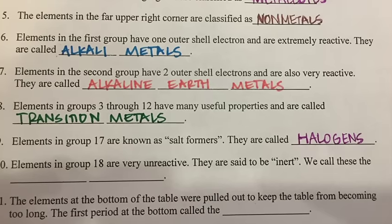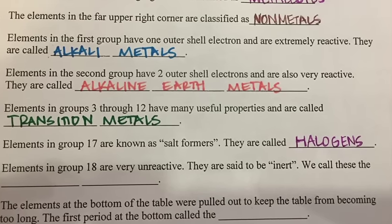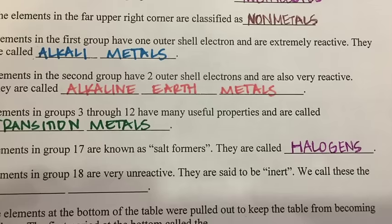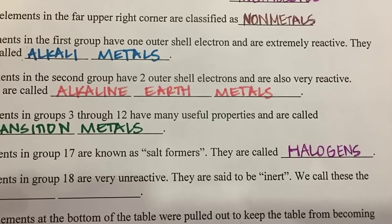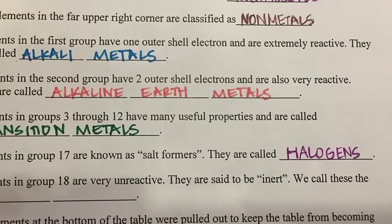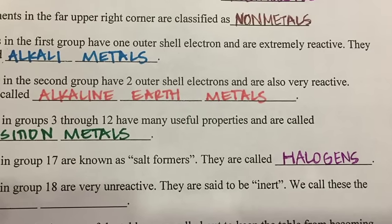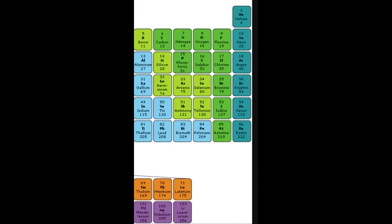Group seventeen are all non-metals. They are very reactive and poor conductors of heat and electricity. They react with metals to form salts, so sometimes they are called salt formers. They are called the halogens, and this group consists of fluorine, chlorine, bromine, iodine, and astatine.